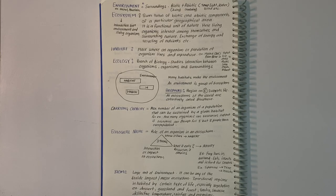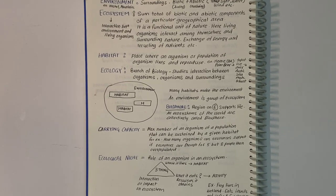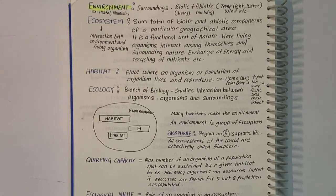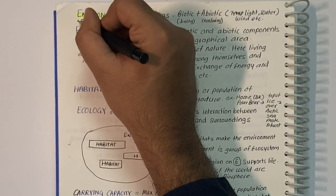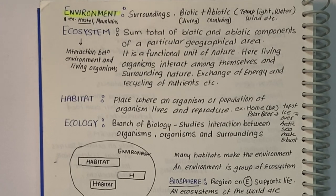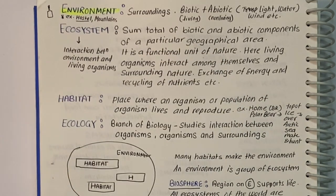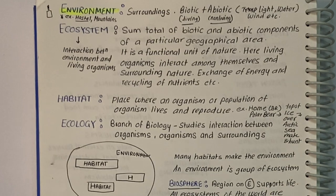Let us discuss some basic terms. Environment means our surroundings — that includes both biotic and abiotic factors. Biotic means human beings, animals, or any living thing surrounding us. Abiotic means factors such as sunlight, soil, and temperature — non-living things.